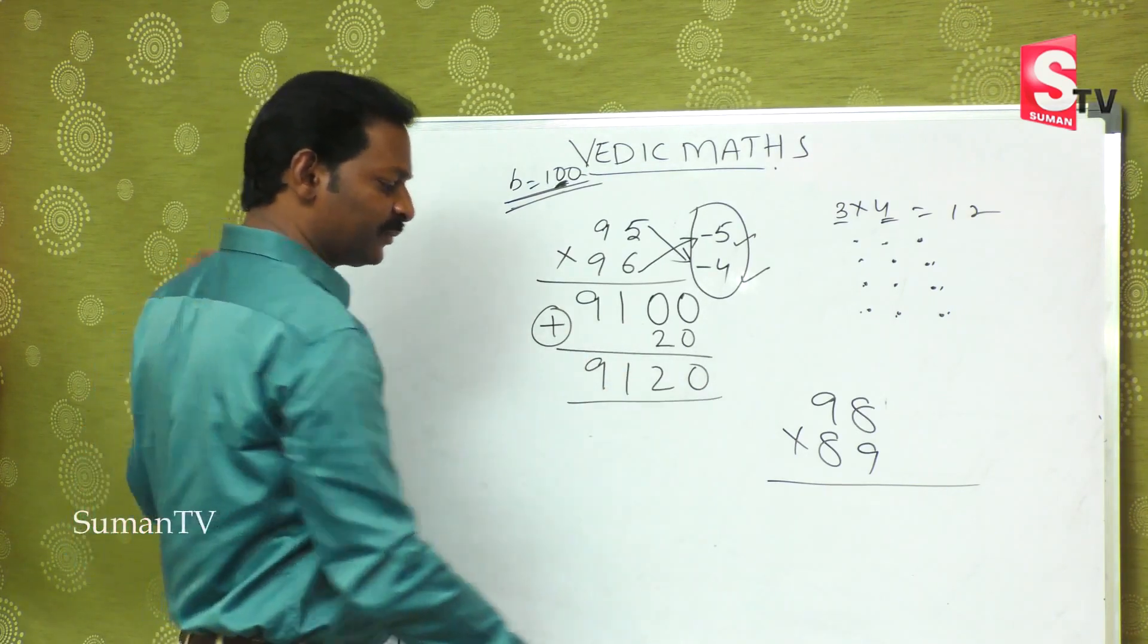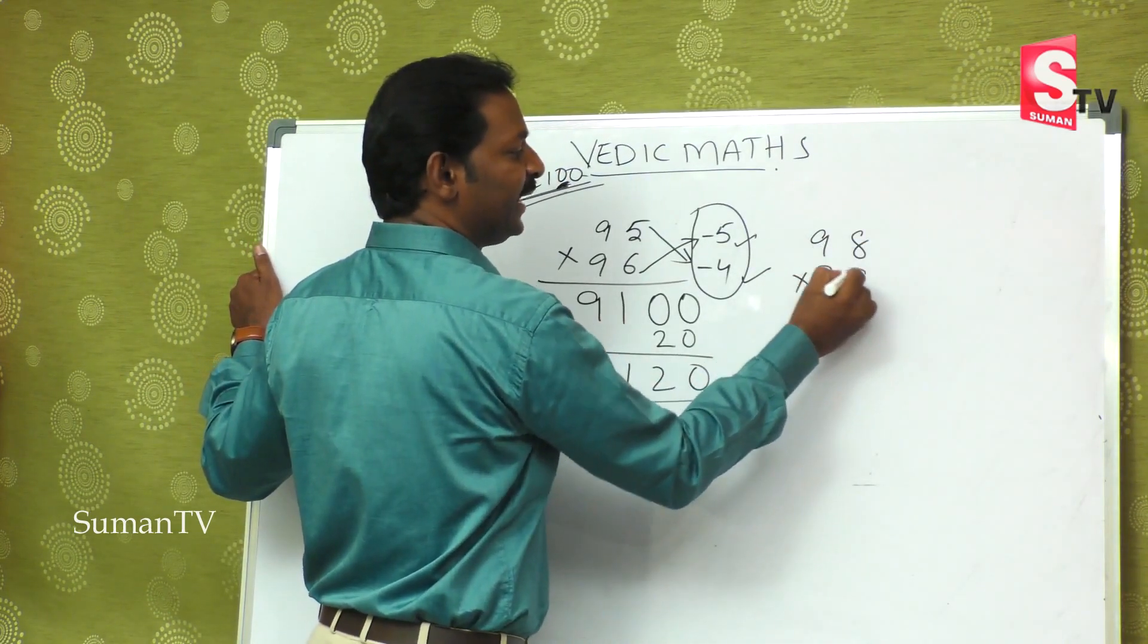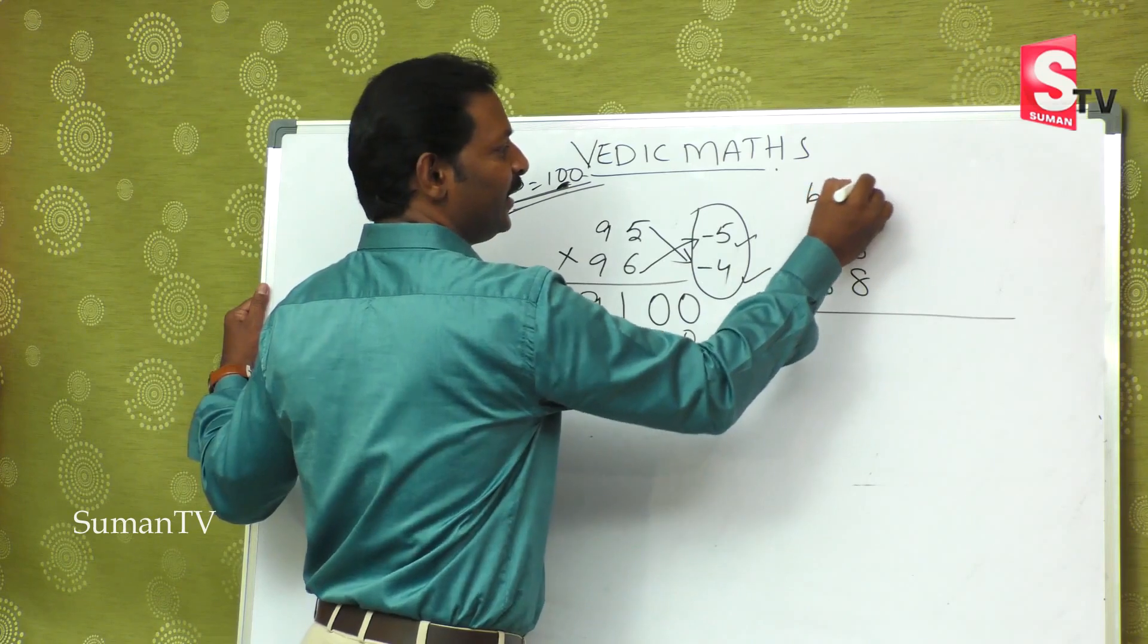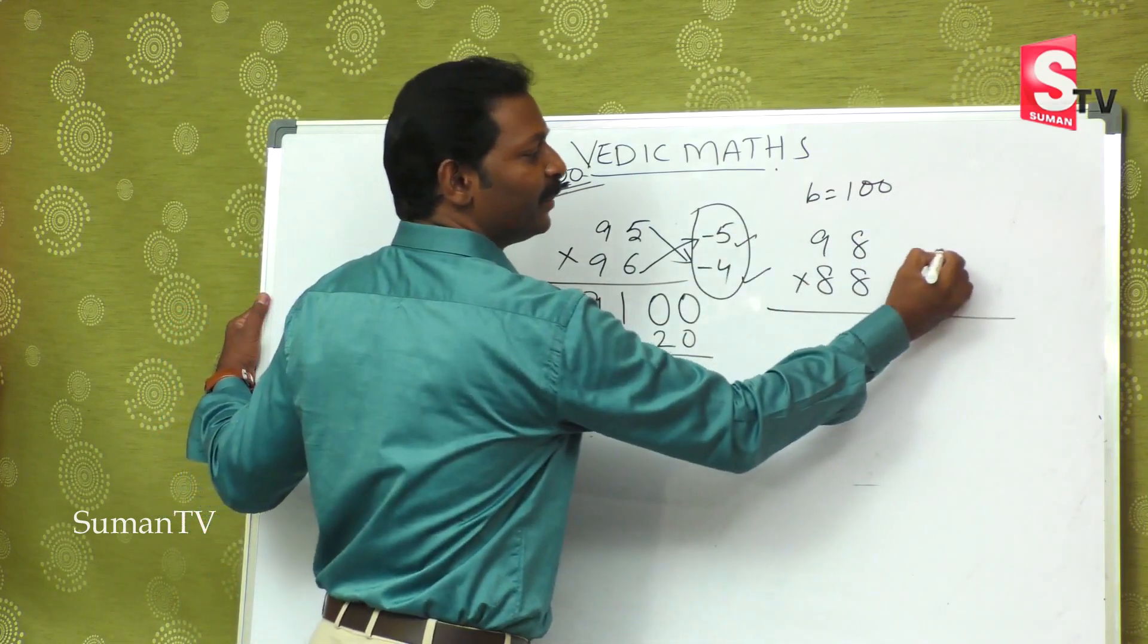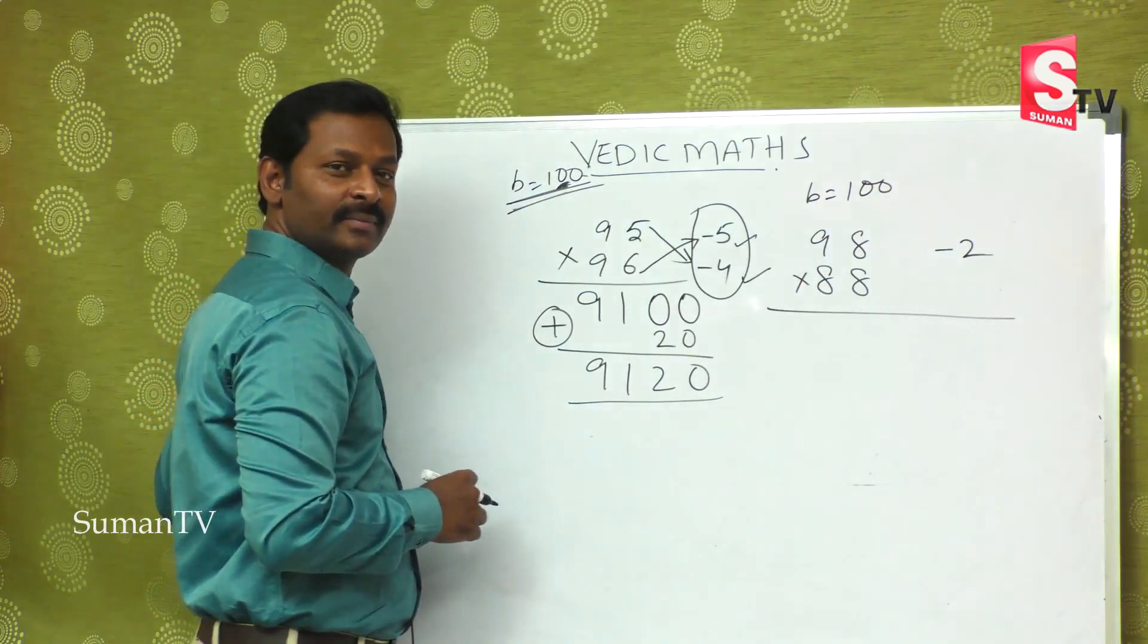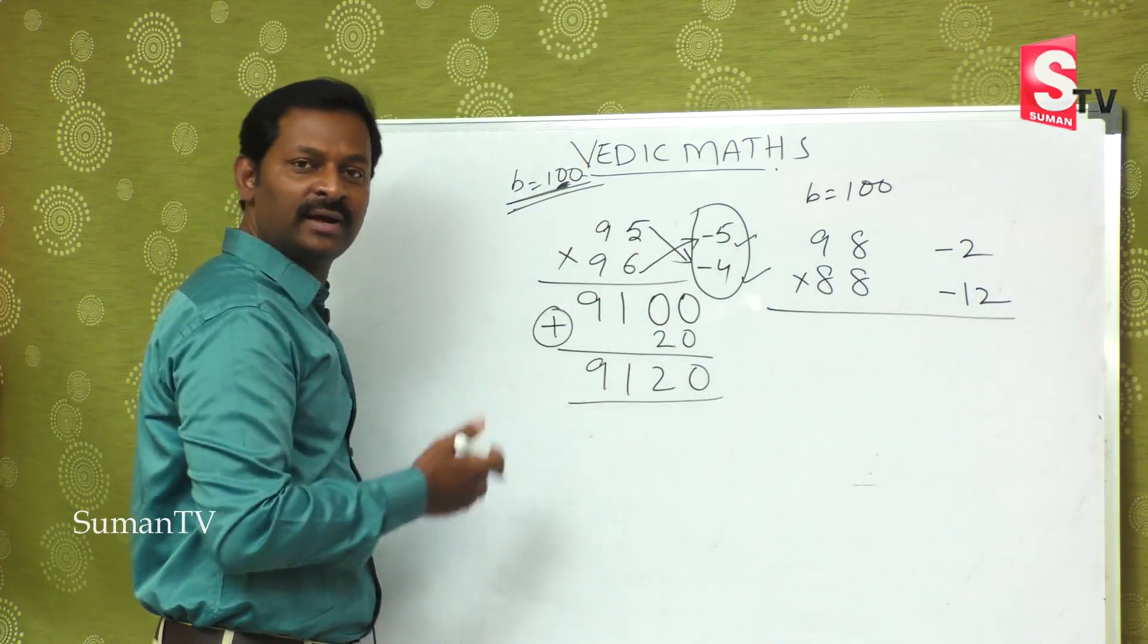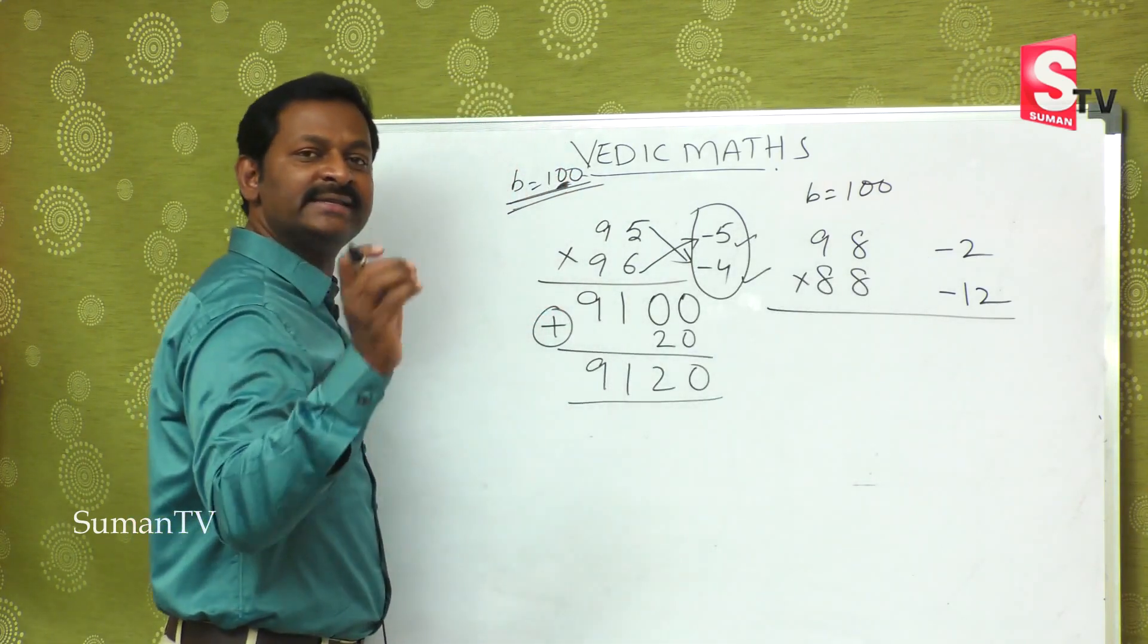Coming to this one, I will show you. What is the number? 98 is multiplied by 88. The base value is 10 or 100? Base is 100, no doubt in that. And this is less than 2, minus 2, but it is less than 12, minus 12, because 88 plus 12 is equal to 100.